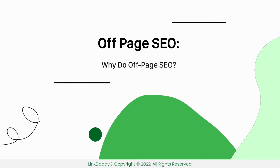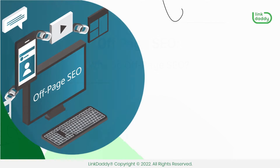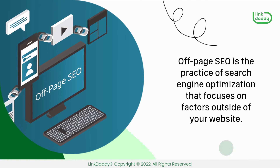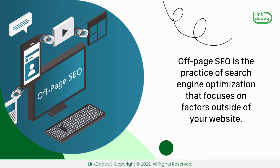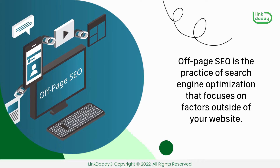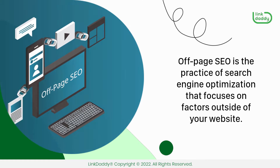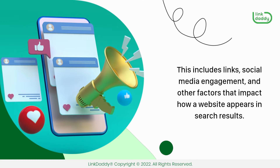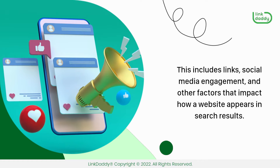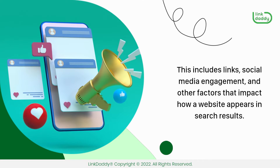Off-page SEO. Why do off-page SEO? Off-page SEO is the practice of search engine optimization that focuses on factors outside of your website. This includes links, social media engagement, and other factors that impact how a website appears in search results.